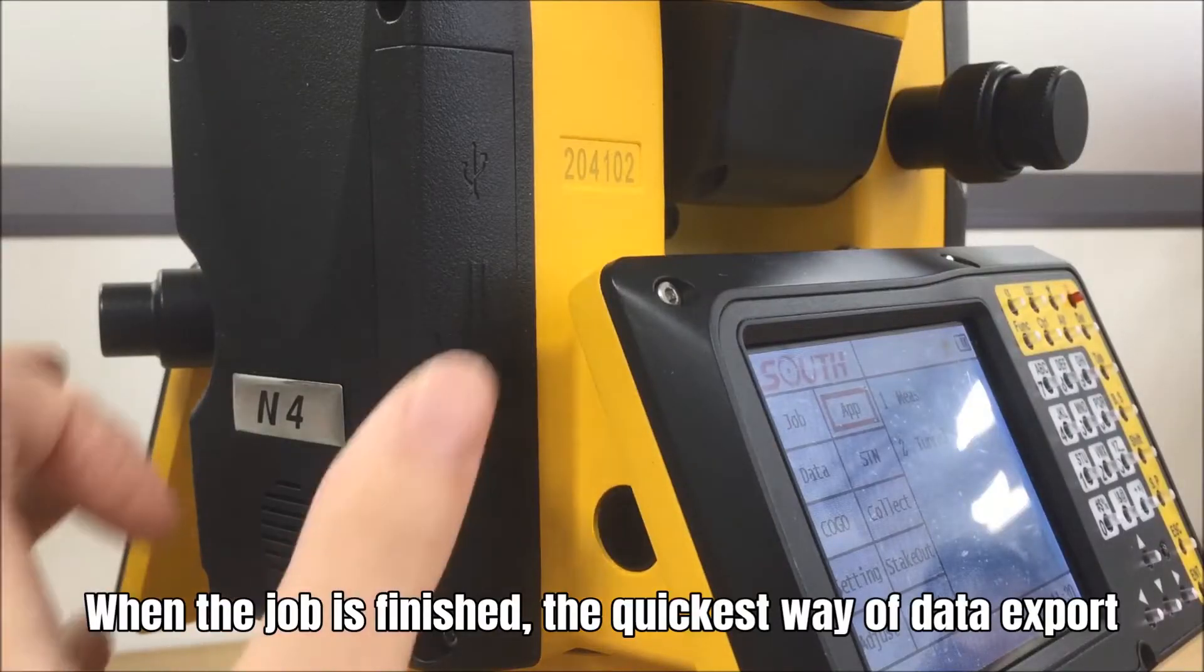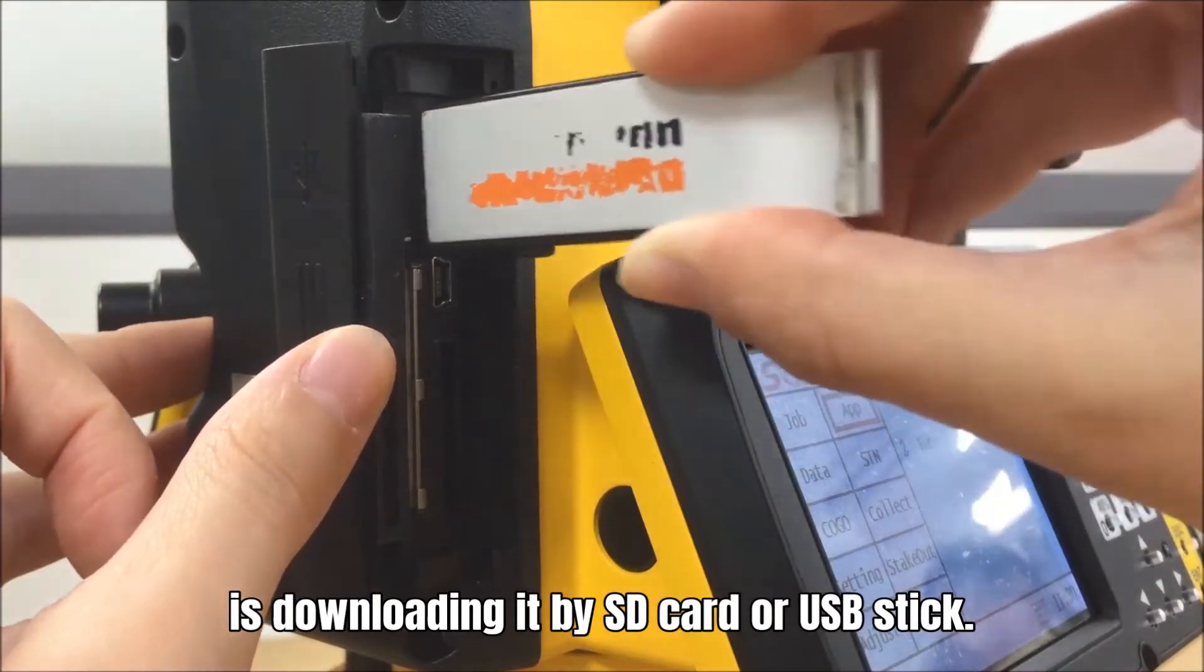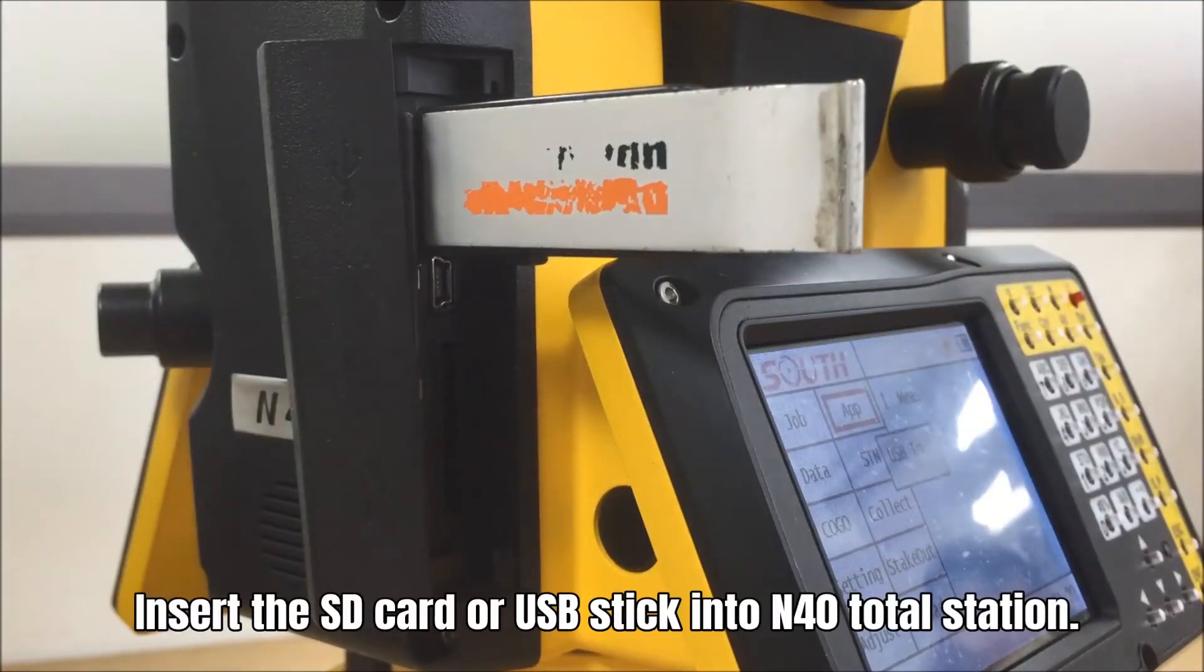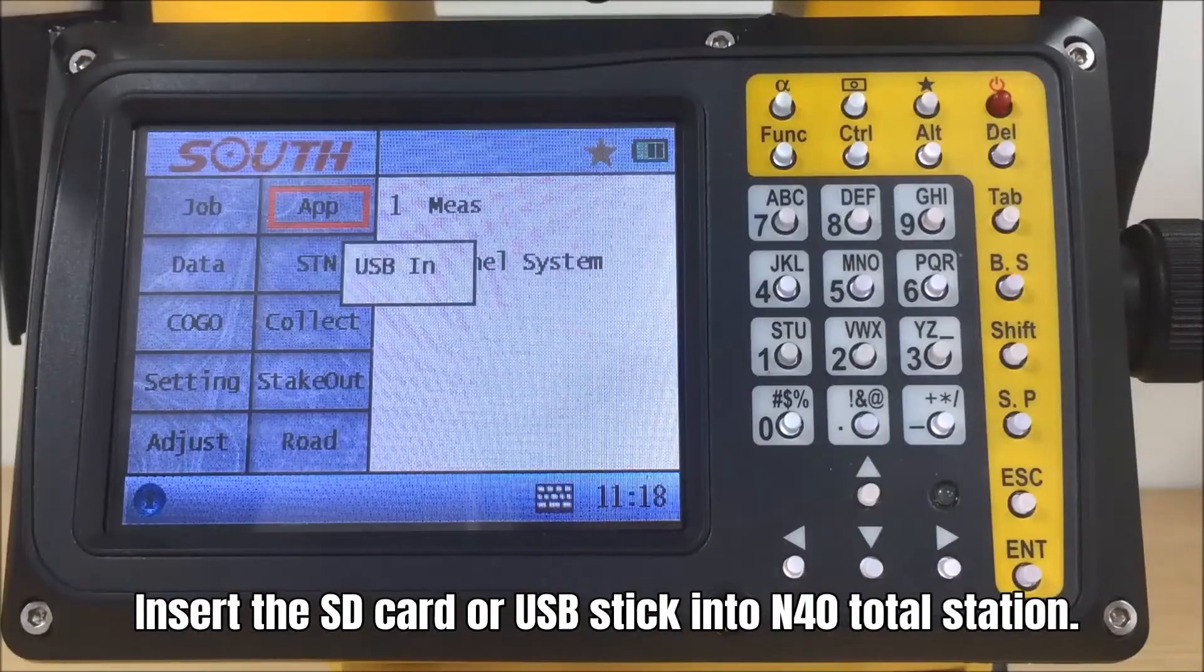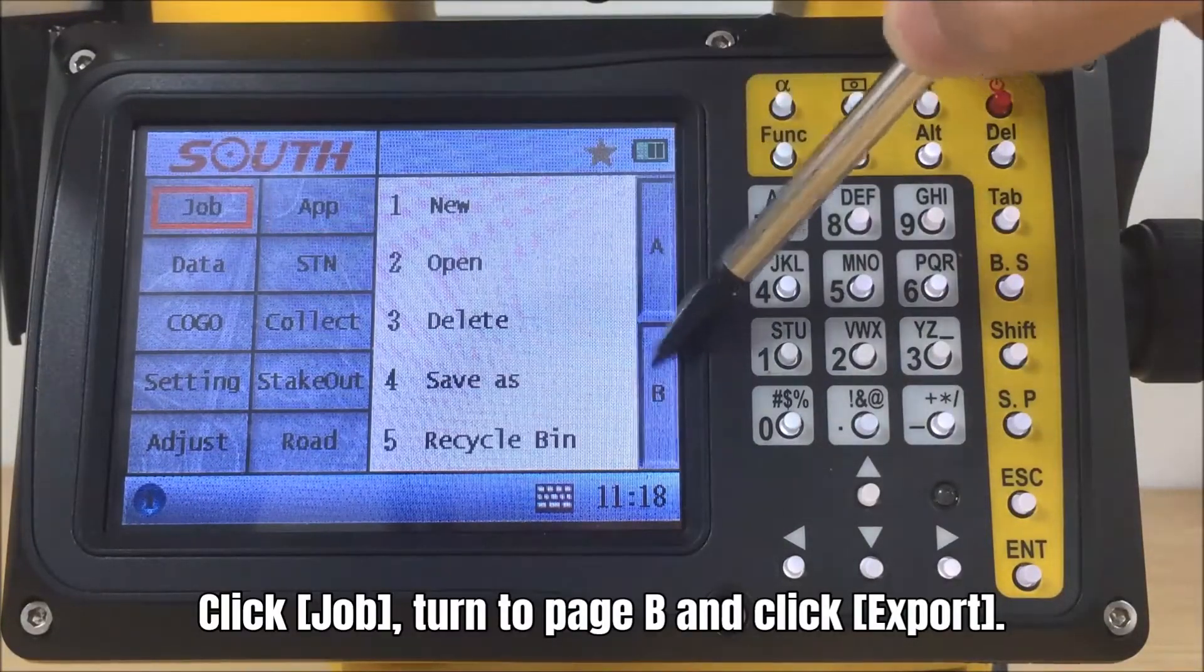When the job is finished, the quickest way of data export is downloading it by SD card or USB stick. Insert the SD card or USB stick into N40 Total Station. Click job, turn to page B and click export.